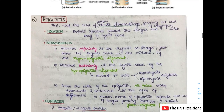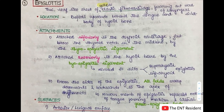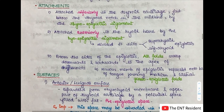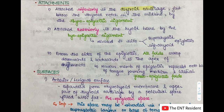First we talk about the epiglottis. It is a thin leaf-like sheet of yellow elastic fibrocartilage which forms the anterior wall of the laryngeal inlet. It projects upwards behind the tongue and the body of the hyoid bone. It is attached inferiorly to the thyroid cartilage just below the thyroid notch in the midline by the thyroepiglottic ligament, and anteriorly to the hyoid bone by the hyoepiglottic ligament, which divides the epiglottis into a suprahyoid part and an infrahyoid part.